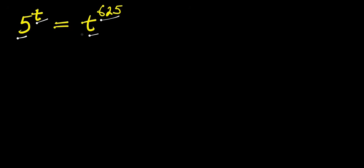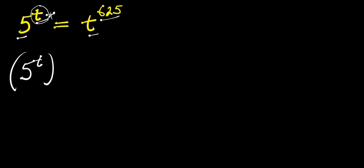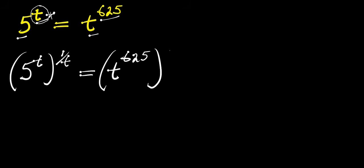We are going to start by eliminating this t here, because I want all the variables to be on one side and the numbers on the other side. So we are going to have 5 power t raised to the power 1 over t, and this equals t power 65 raised to the power 1 over t.